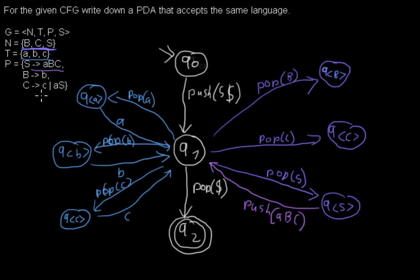Then for C we have one rule C expands to c. For that we add a transition that pushes the small c onto the stack. And for C expands to A, S, we push A, S.